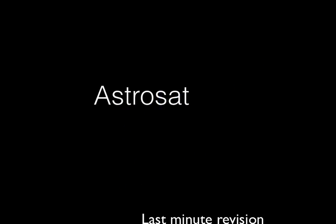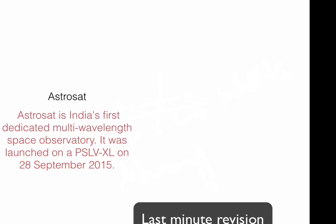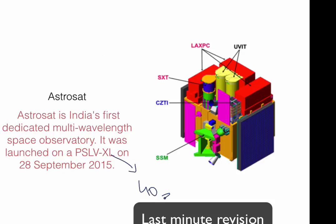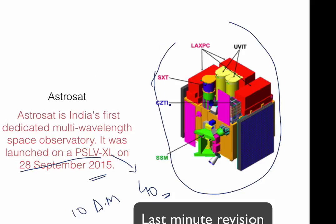AstroSat is India's first dedicated multi-wavelength space observatory. It was launched on a PSLV-C40 on 28th September 2015 at 10 a.m. This satellite was launched by India and it is India's first dedicated multi-wavelength space observatory.